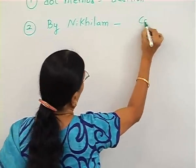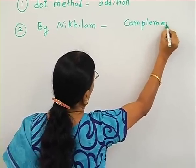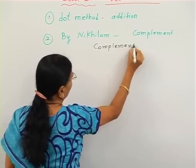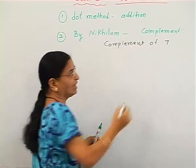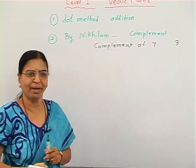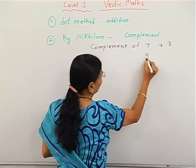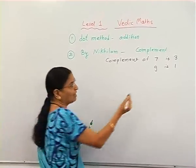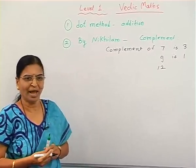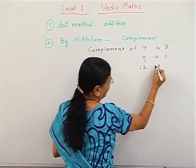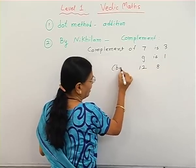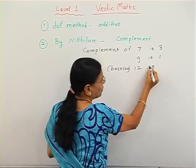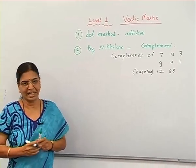So what is the complement? Suppose the complement of 7 — the base is 10 and the complement is 3. The complement of 9 is 1, because the addition equals the base. Suppose we take the 2-digit number 12 — the base will be 100, so the last digit Nikhilam is from 10 and the first from 9, giving us 88.